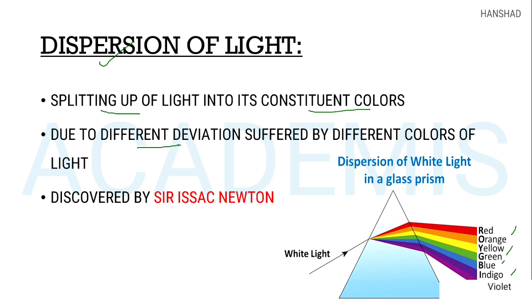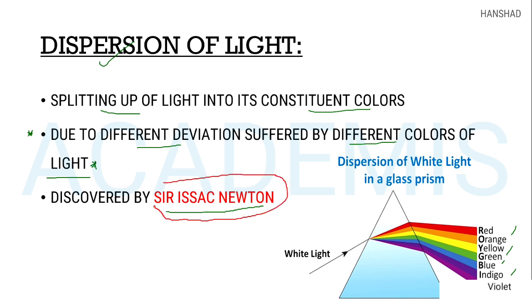Dispersion is due to different deviations suffered by different colors of light. One of the colors has one of the deviations — that is also the dispersion of light. Who discovered dispersion? Dispersion of light is a very important phenomenon. Sir Isaac Newton discovered dispersion of light.